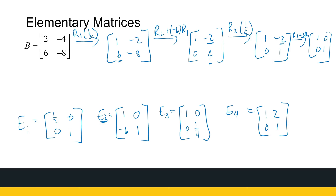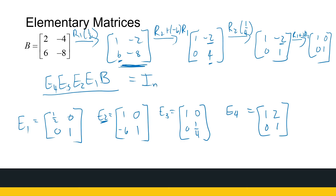So we've performed Gaussian elimination on B to get to the identity matrix. For each row operation we've generated the matching elementary matrix. To get from the first step to the second was multiplying E1 with B; to get the next matrix we multiply on the left by E2, then E3, then E4. After all these multiplications you get the identity matrix I2. So we can write the identity matrix as a product of matrices: E4·E3·E2·E1·B = I.